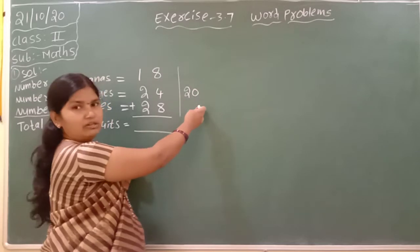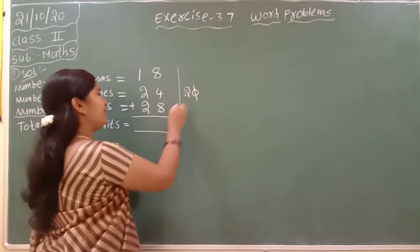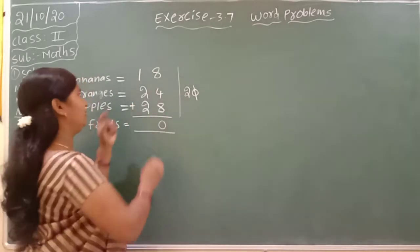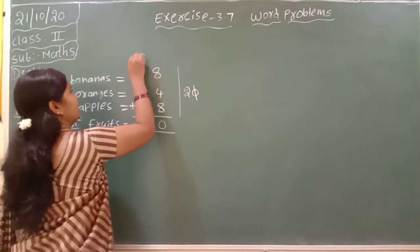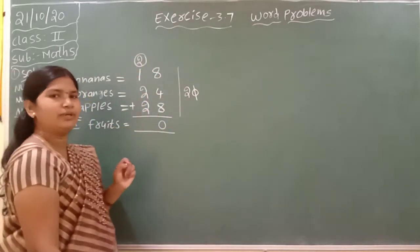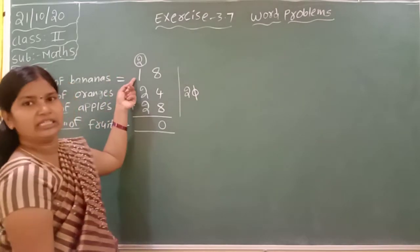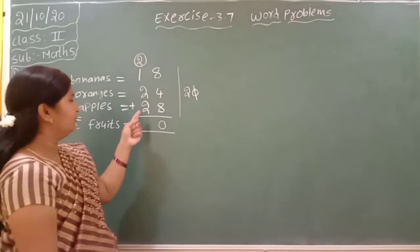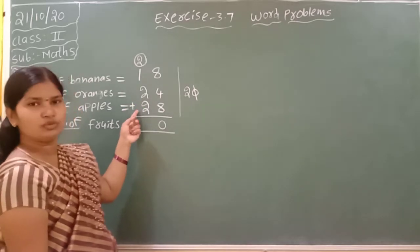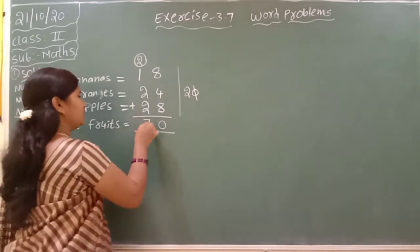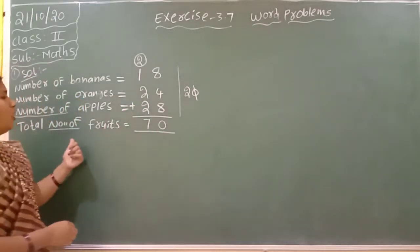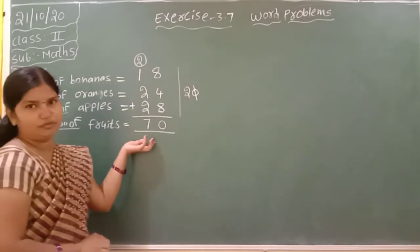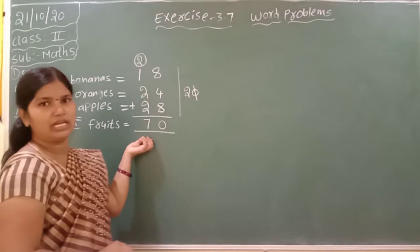Now add the tens place: two plus one is three, three plus two is five, five plus two is seven. So total, how many fruits did our mother buy? Seventy fruits for making the fruit salad.